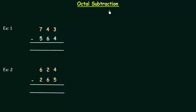In this lecture we will learn octal subtraction. The first octal number is 743 and the second octal number is 564. In subtraction we have to start from the rightmost digit.